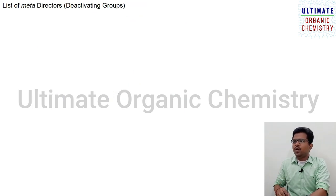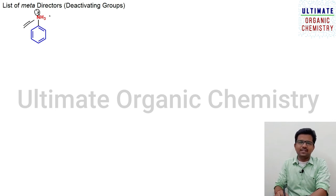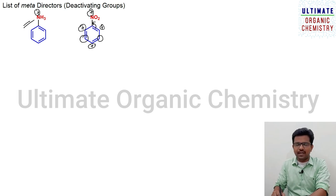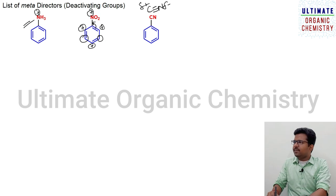Now for meta directors, otherwise known as deactivating groups. First is the anilinium ion, where nitrogen has a positive charge — this is a tricky example but it is considered a meta director. The nitro group has a positive charge on nitrogen, accepts electrons, decreases electron density at ortho and para positions, and increases it at meta — so it is a meta director. Cyano group (C≡N): carbon is less electronegative than nitrogen, so electron cloud moves towards nitrogen (δ−), leaving the carbon with a partial positive charge (δ+), making it an electron withdrawing group.